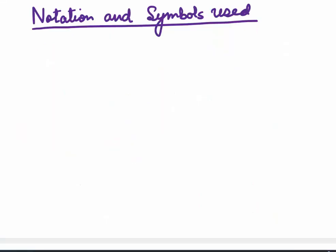I will use some examples to explain elementary row transformations. But before that, let's look at some notations and symbols which are used. For rows, we use the capital letter R. For the first row, we use R1. For the second row, R2. For the third row, R3. Depending on how many rows we have, we use these capital letters.